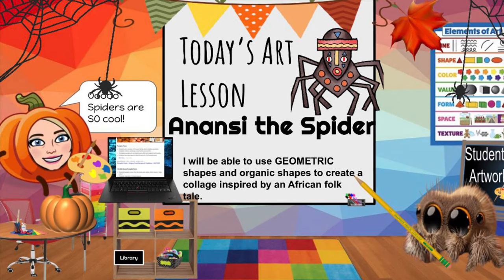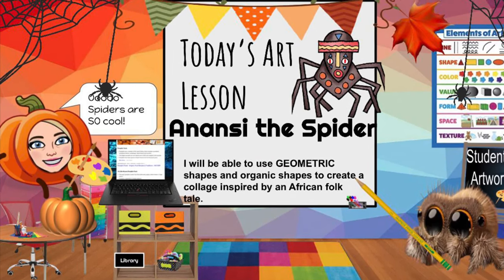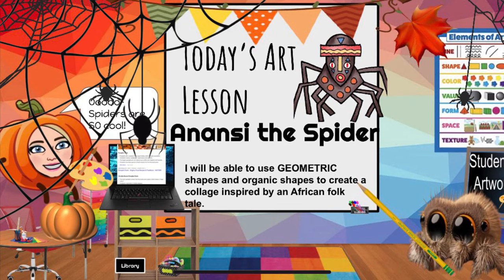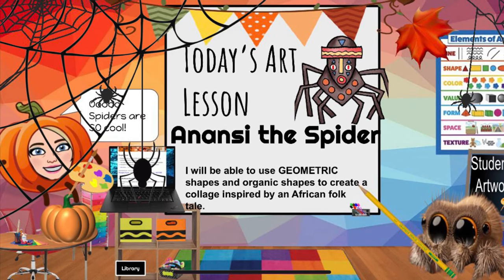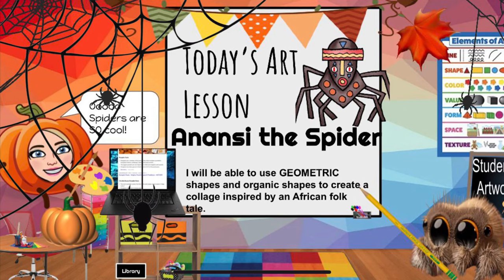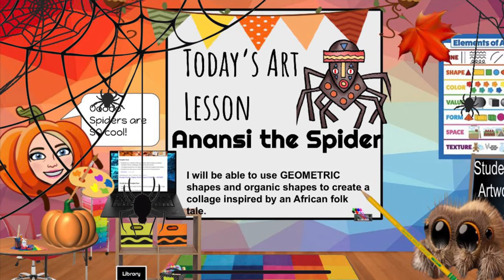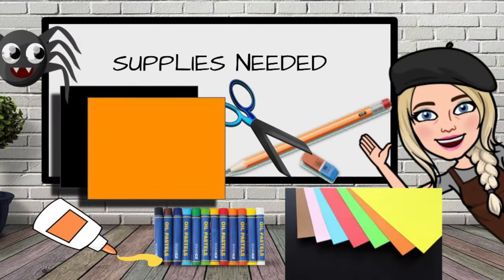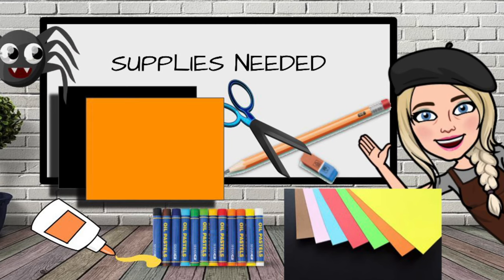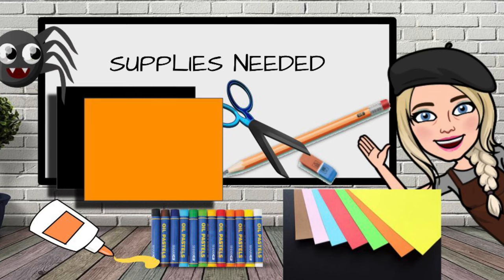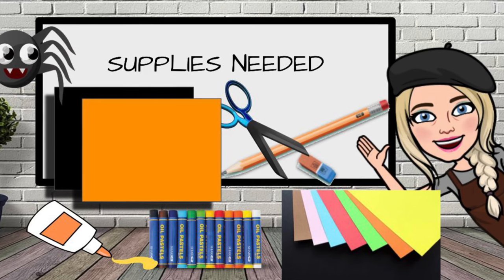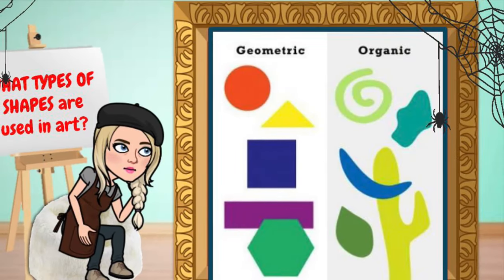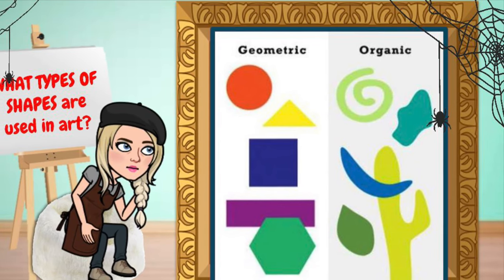Hi art friends and welcome back to the Artrageous Art Studio! Today's awesome art lesson is called Anansi the Spider. We are going to be focusing on the element of art called shapes, and we're going to be using shapes to create a spider collage based on Anansi the Spider. Here is what you'll need to get started: construction paper, scissors, pencil, eraser, glue, a ruler, and a white colored pencil or oil pastel to make the spider web. Our essential question is: what types of shapes do artists use in their artwork?